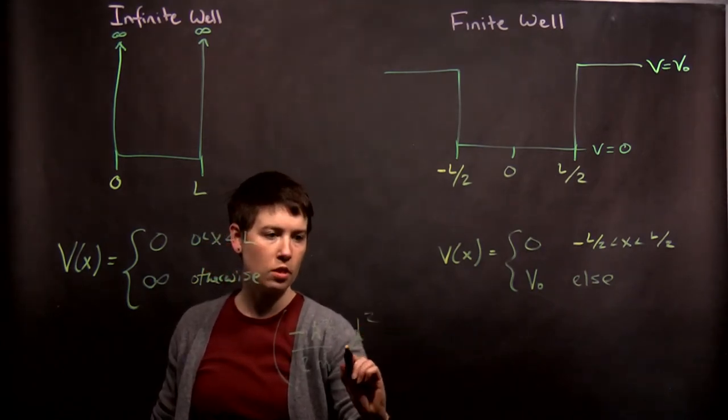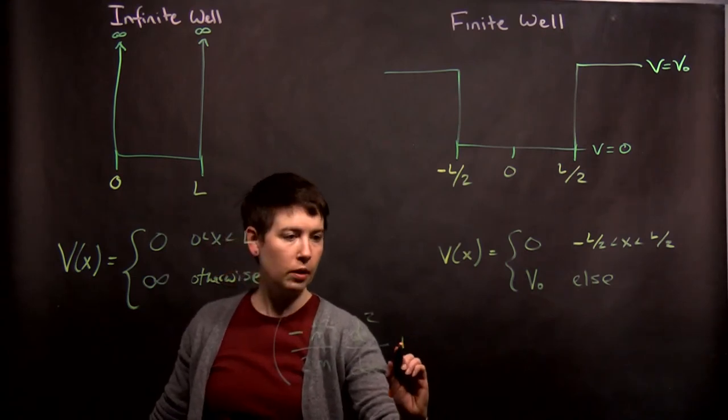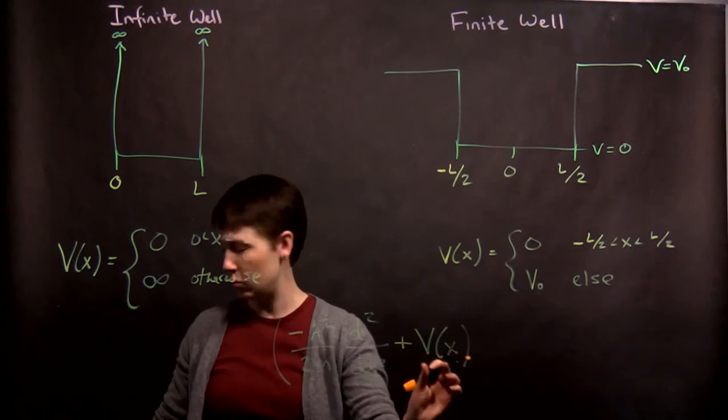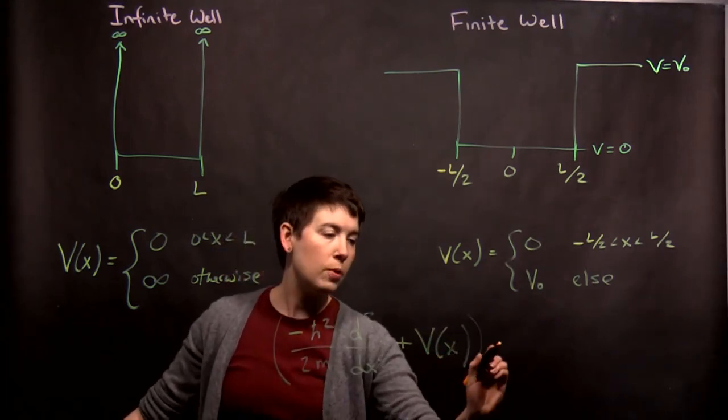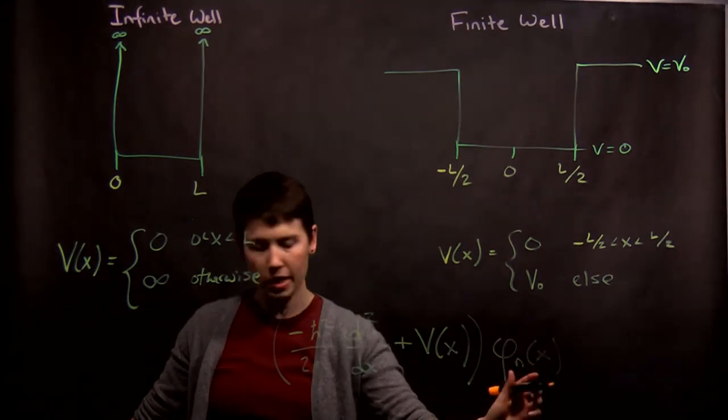Second derivative then, with respect to position, d²/dx², plus V(x), right, again this important potential that defines what our system is, multiplied by our energy eigenstates in the position representation.